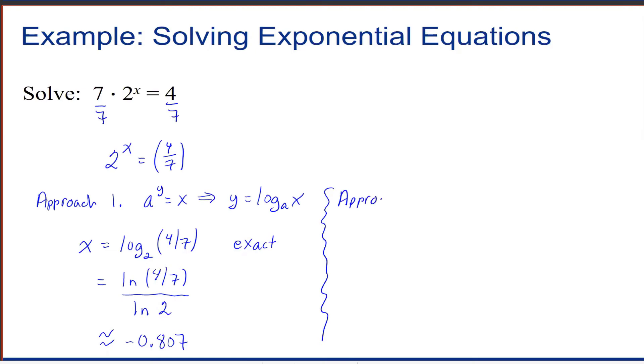Approach 2: we isolate the exponential so we have 2 to the x equals 4/7, and then take the natural log or common log of both sides of the equation. This time I'll do the common log of both sides, so we have log of 2 to the x power equals log of 4/7.